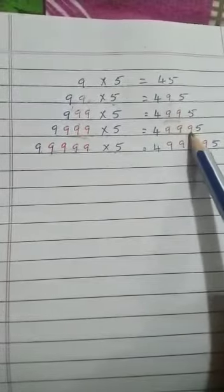9, 5, 45. 9, 5, 45, 1, 9 extra. And here also 1, 9 extra. 9, 5, 45, 2, 9s extra, 2, 9s extra. 9, 5, 45, 3, 9s extra, 3, 9s extra. Similarly, you can write any type of numbers and multiply the numbers and write the products.